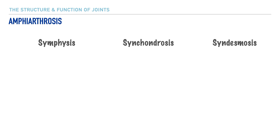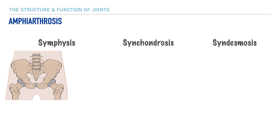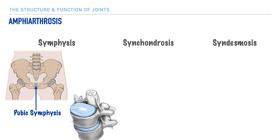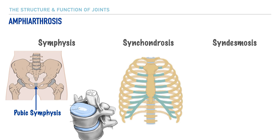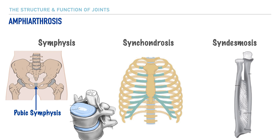Next is amphiarthrosis, or semi-movable joints. For symphysis, we can refer to the pubic symphysis — a fibrocartilaginous structure that allows for very slight movement — and also the articulation between vertebrae and the intervertebral disc. For synchondrosis, the example is the cartilage connecting the ribs to the sternum. And for syndesmosis, dense fibrous tissue connects the radius and ulna, and similarly the tibia and fibula — these are called interosseous membranes.